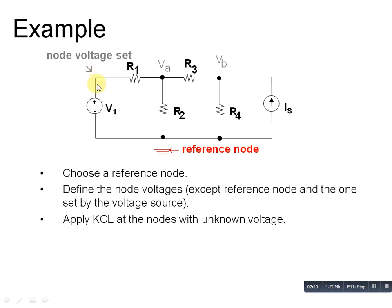Here we take voltage Vb, and this Vb is directly connected to current source and reference node. Then applying the KCL at the node with unknown voltage. This is our node one, Va equation. This is our node two, Vb equation.